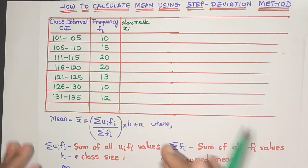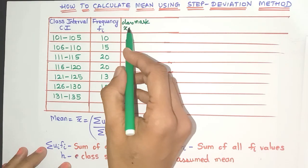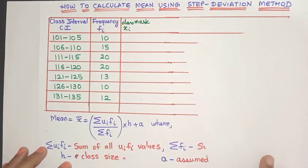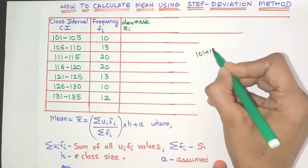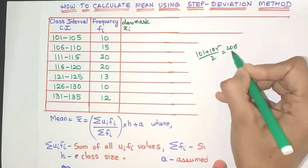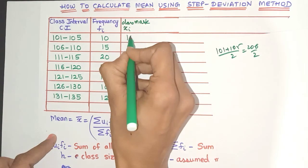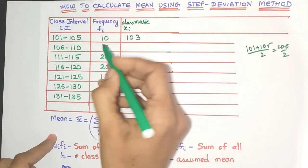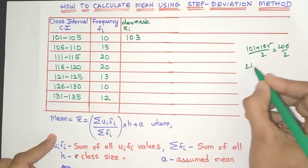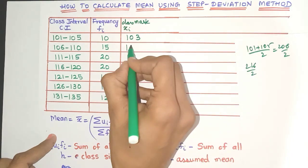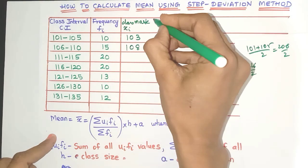So let's continue as it is. What is the class mark? 101 plus 105 divided by 2, that is 206 by 2, I'll get 103. See friends, it's very easy. Same way here, if I do, I'll get 216 by 2, which is yes, 108.